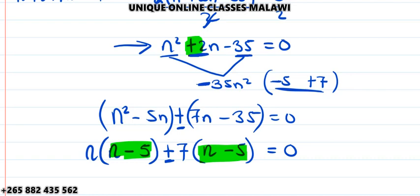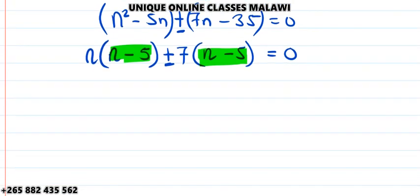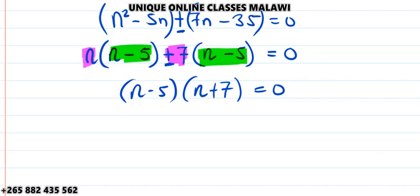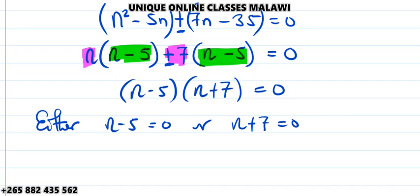You can see that this bracket is the same as that bracket. Since they're the same, pick one bracket, which is (n - 5), and the other bracket is the combination of these two factors: (n + 7). So (n - 5)(n + 7) = 0. Either n - 5 = 0 or n + 7 = 0. So n = 5 or n = -7.